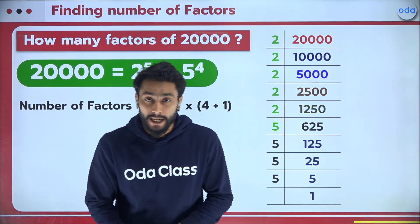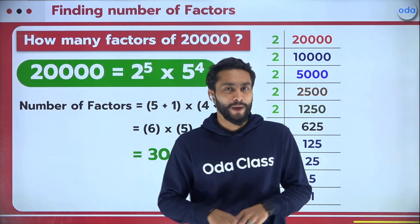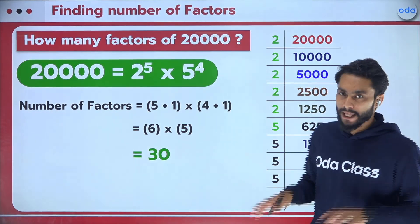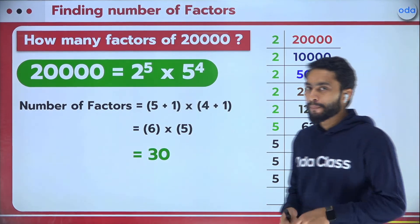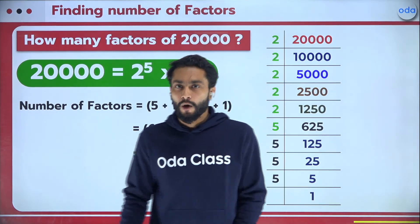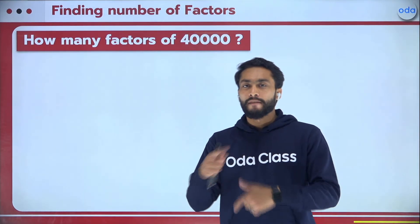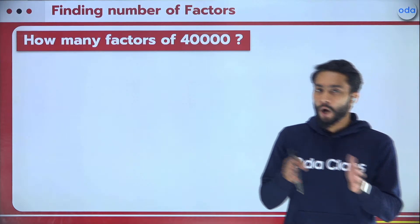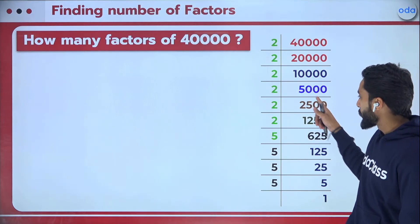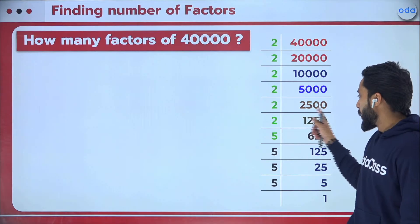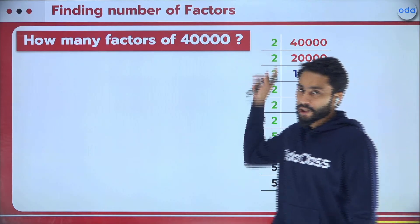So 20,000 has 30 factors. When you solve it yourself you'll definitely get it within 20 seconds — you just need to be fast with division by 2, 3, and 5. Now let's look at another example: how many factors does 40,000 have? Think about the prime factorization. We just did 20,000 — now we are doing 40,000, which is 20,000 × 2.